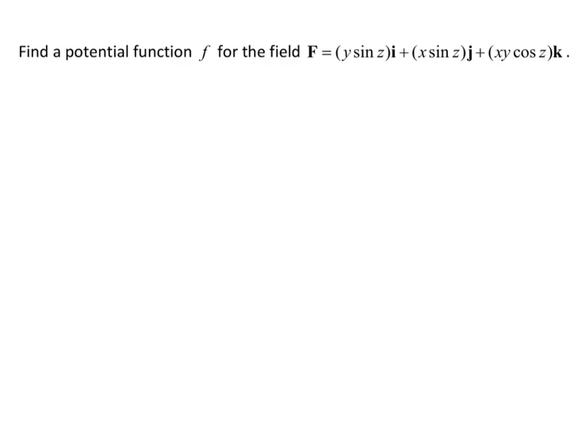We'll do this through an example. Find a potential function lowercase f for the field capital F equals y sine of z i plus x sine of z j plus xy cosine of z k. This is the same vector field that we showed is conservative in the last video.